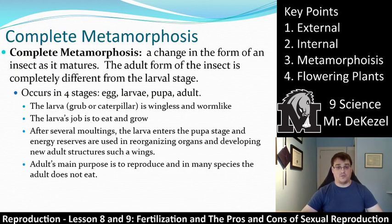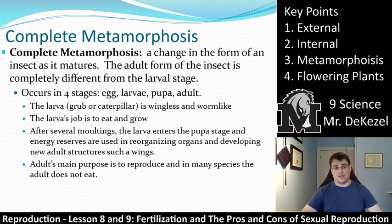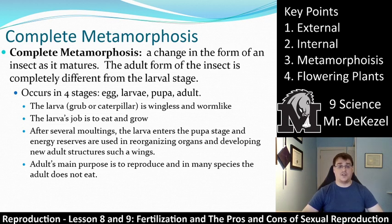The larva or caterpillar is wingless and worm-like; its only job is to eat and to grow. After several moltings, the larva enters the pupa stage, where energy reserves are used in reorganizing organs and developing new adult structures such as wings. This is different from the grasshopper, which simply grew wings after shedding its outer skin. In complete metamorphosis, the pupa dissolves different organs, reorganizes them, and develops completely new structures, coming out as a completely different insect. The butterfly's main purpose as an adult is to reproduce — many species don't even eat as adults.